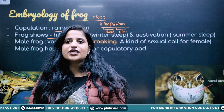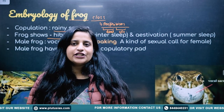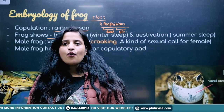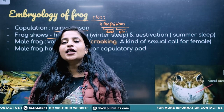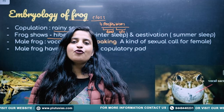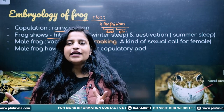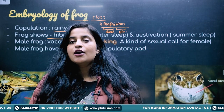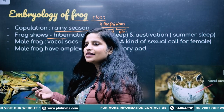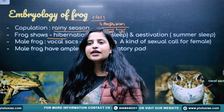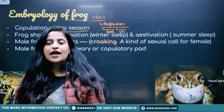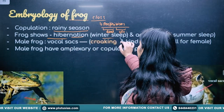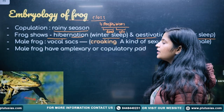Why do they undergo hibernation and estivation? To maintain body temperature. Animals belonging to class Amphibia don't have a constant body temperature — they are cold-blooded animals and must maintain their body temperature according to environmental conditions. We mammals are homeothermal, warm-blooded organisms with a fixed body temperature, but frogs are not. That's why they show hibernation and estivation.